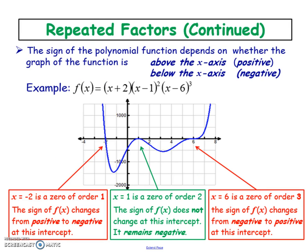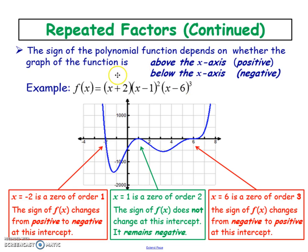Here's everything wrapped up. We have three x-intercepts: one at negative 2, one at positive 1, and one at positive 6. This doesn't mean it's a cubic — there is one x-intercept here at order one, two x-intercepts at order two, and three x-intercepts at order three. That means one plus two plus three equals six, so this is a degree 6 polynomial.